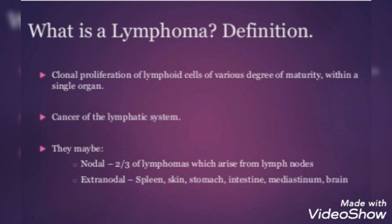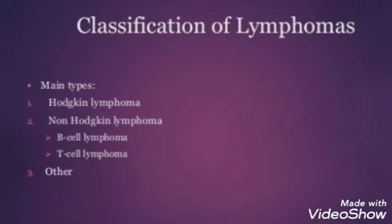Lymphoma may be nodal — that is two-thirds of lymphomas, which arise from lymph nodes — or lymphomas can be extra-nodal when they arise from the spleen, skin, stomach, intestine, mediastinum, or the brain. Now let's come to the classification of lymphomas.